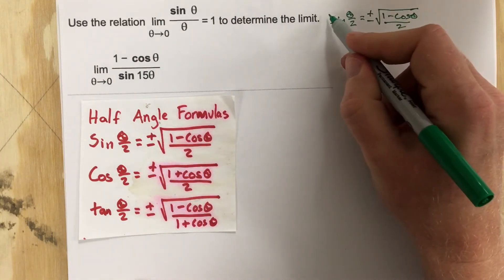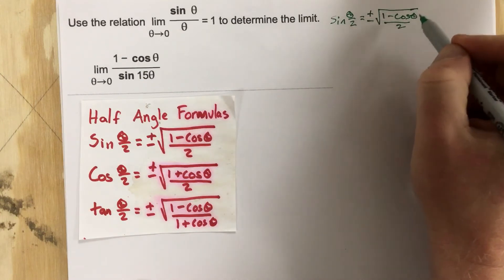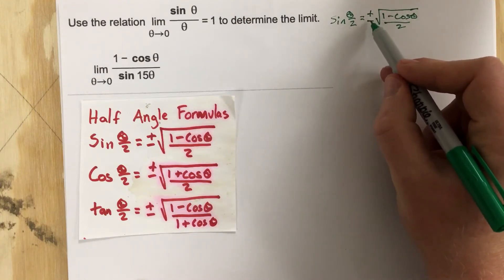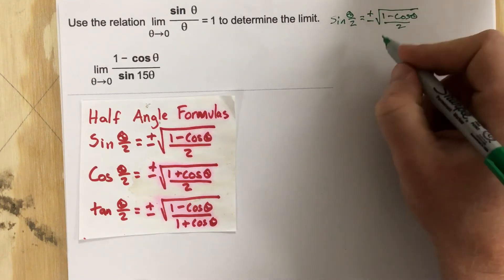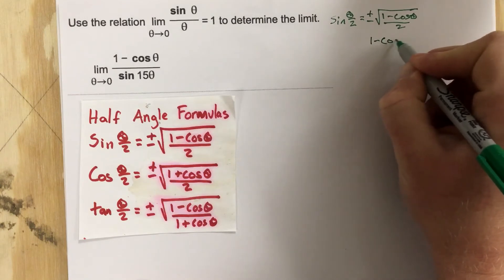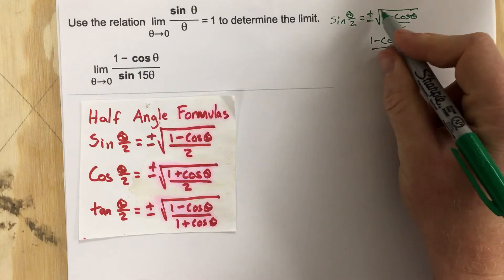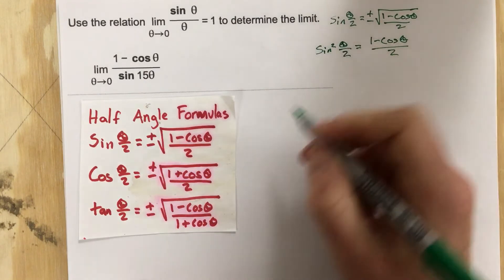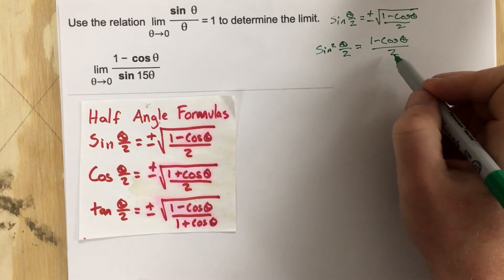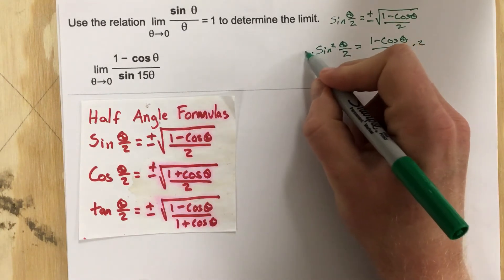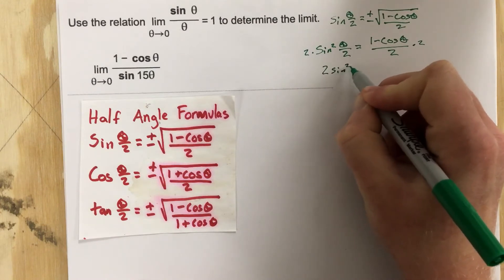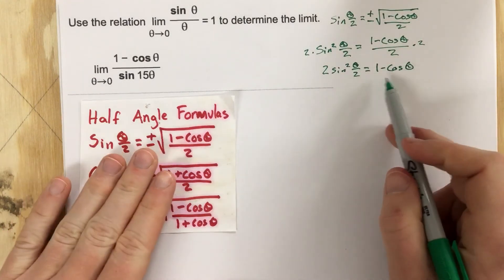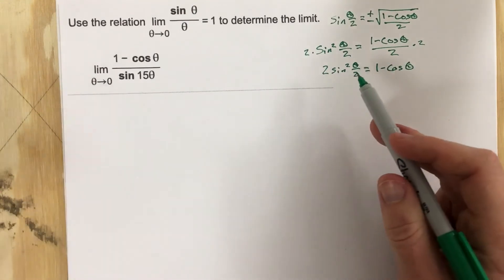We're going to square each side. When you square a radical — and since it says plus or minus — squaring makes it positive regardless. So squaring gives us 1 minus cosine theta over 2 equals sine squared theta over 2. We then multiply both sides by 2, and we get 2 sine squared theta over 2 equals 1 minus cosine theta.